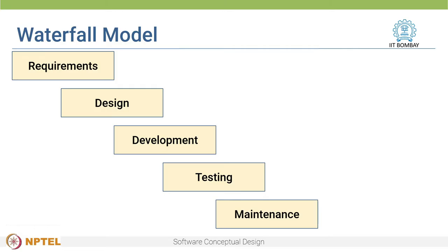This process is commonly known as the waterfall model, where we start from the requirements, move to the design, the development, testing, and finally to the maintenance phase. We see that each of these phases occurs sequentially.